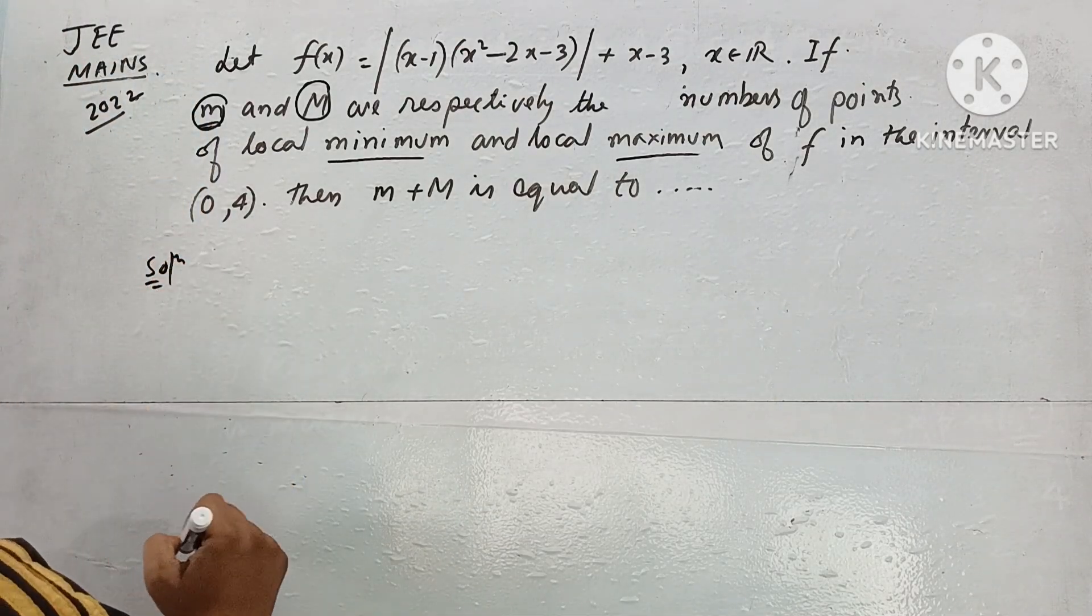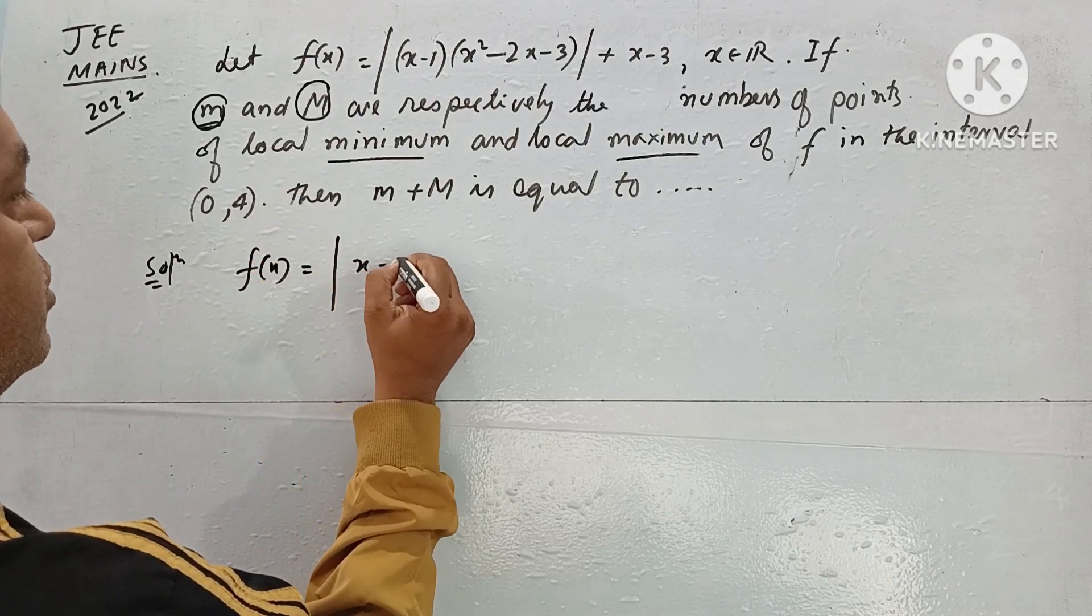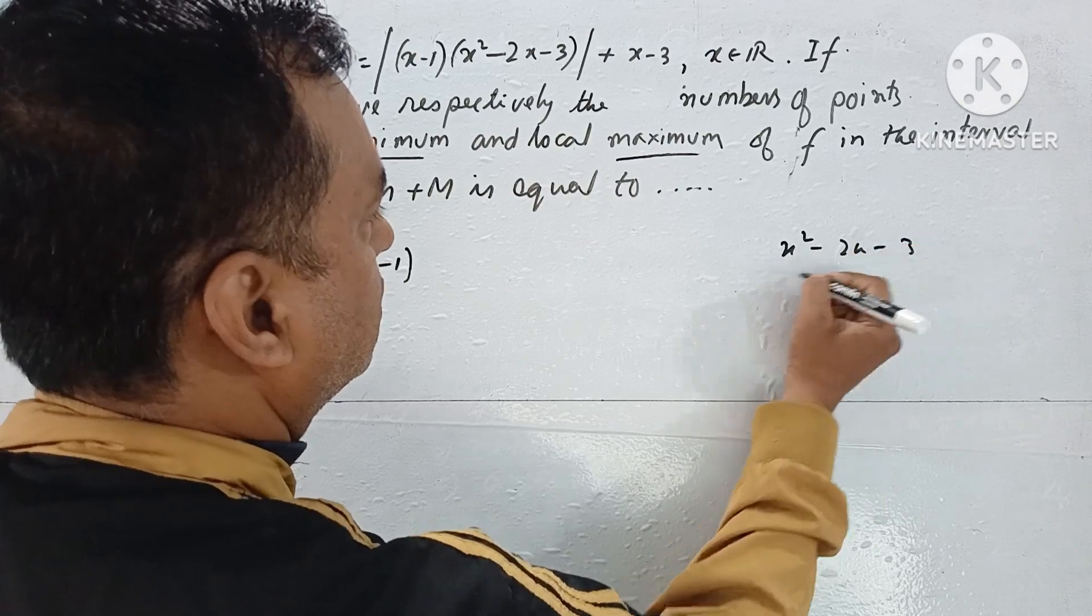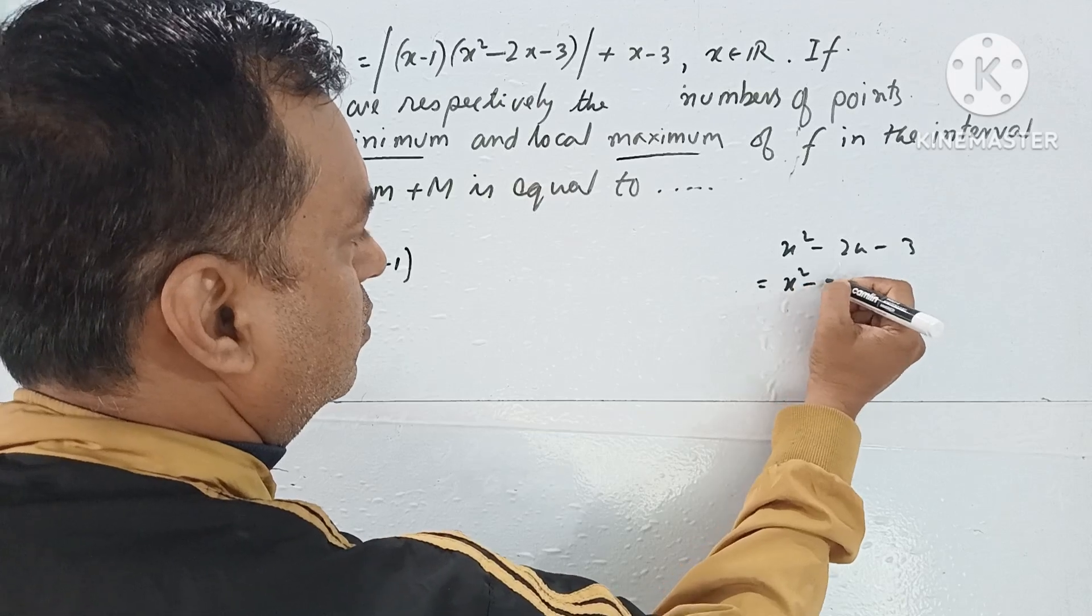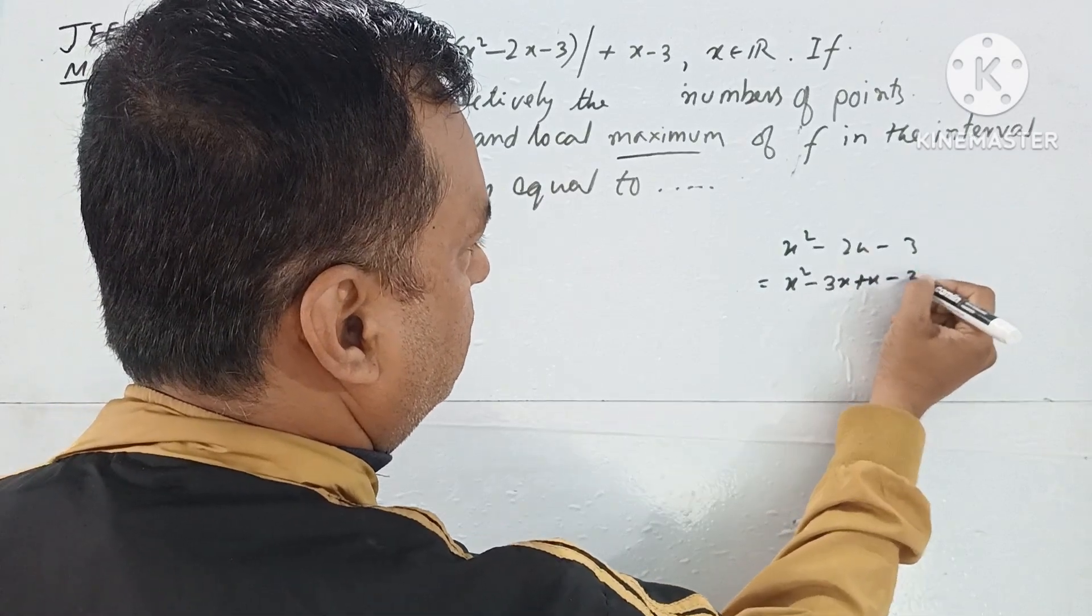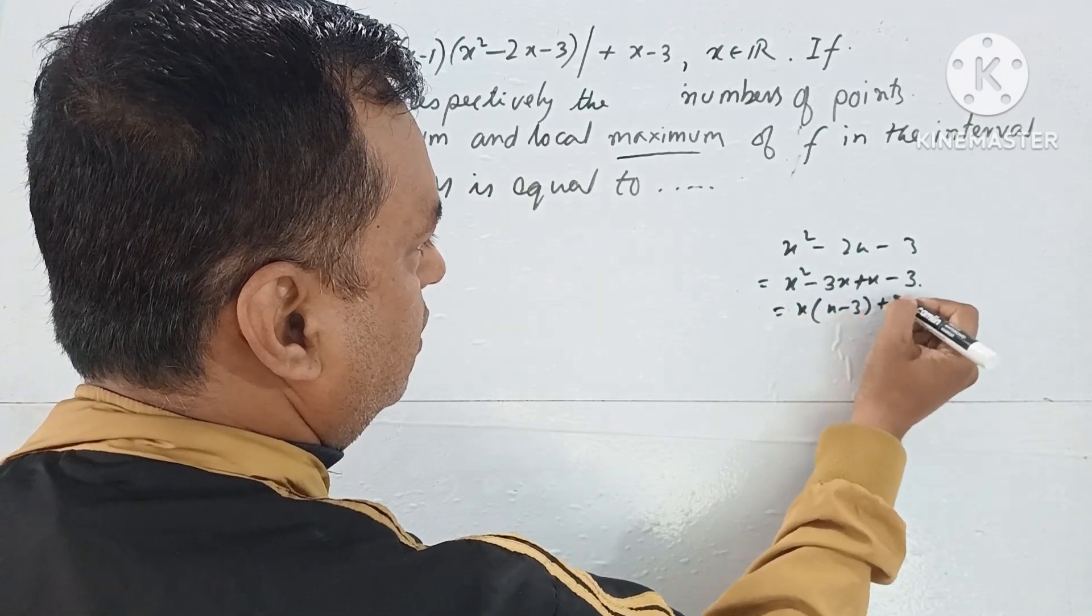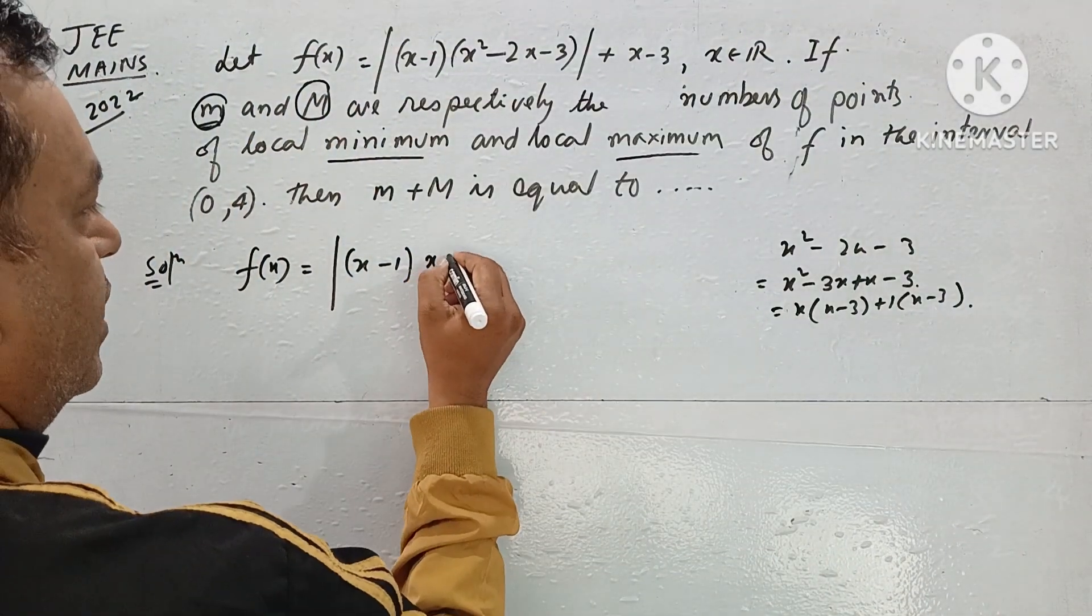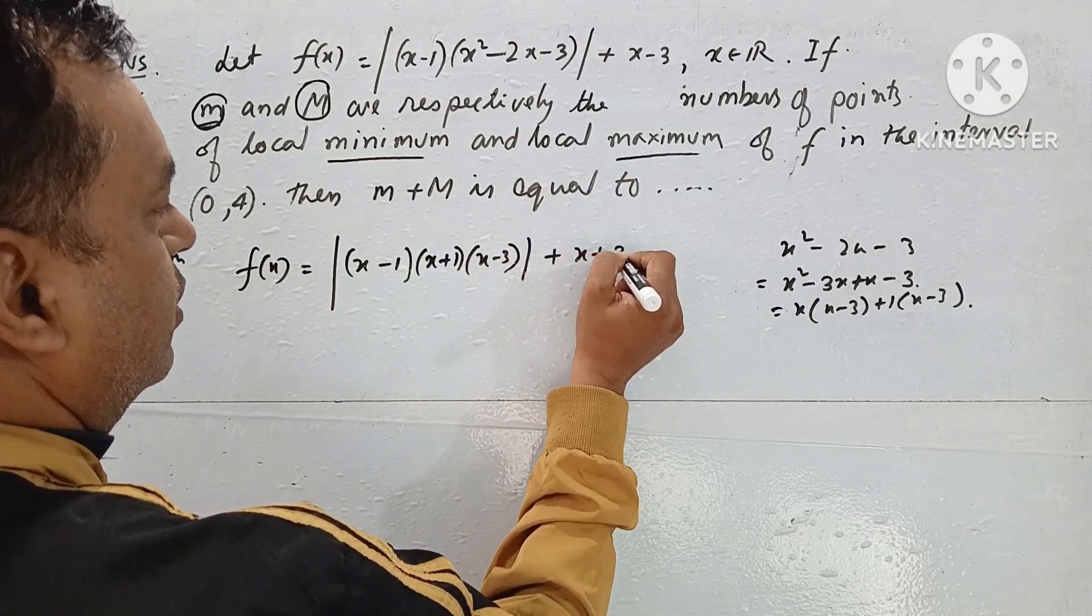Solution: Let's simplify the function. x - 1, we'll factorize this. The factorization is x² - 3x + x - 3, which gives us x(x-3) + 1(x-3). So the factorization is (x+1)(x-3).